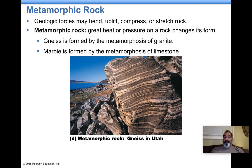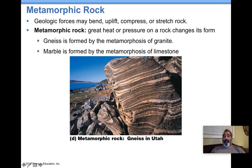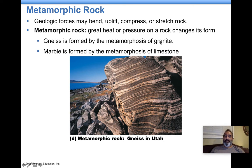Metamorphic rock: take any of the other types of rocks — granite or limestone, for example — and put them under great heat and pressure. They will change. Granite becomes a rock called gneiss, and marble is formed from limestone that is smashed and heated together. So marble is a type of metamorphic rock created from a sedimentary rock, and gneiss is a type of metamorphic rock created from an igneous rock. All rocks can somehow be turned into the other types.